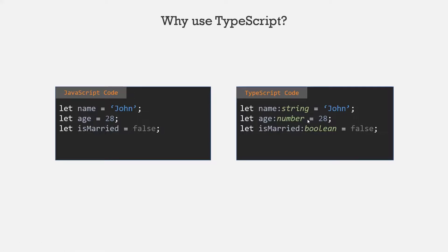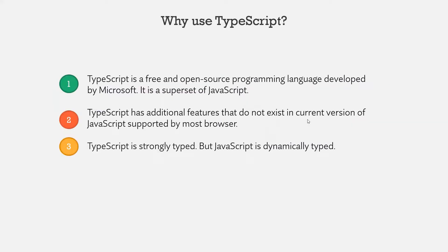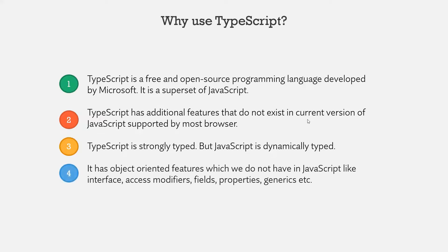Since TypeScript is strongly typed, we can avoid a lot of bugs in our application by specifying the data type of a variable explicitly. This is one advantage or extra feature of TypeScript. Note that in TypeScript, specifying the variable type is optional — it is not mandatory. But using this feature makes your application more predictable and easier to debug when something goes wrong. TypeScript also has quite a few object-oriented features which we do not have in JavaScript, like interfaces, access modifiers, fields, properties, generics, etc., which are not available in the current version of JavaScript.